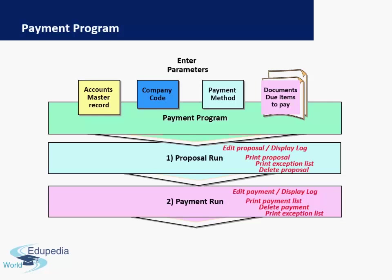If you're happy with the proposal, then you move ahead to the second and last step, which is the payment run. The payment run is exactly like a proposal run, but it will finally make the postings in accounting. This means once a payment run is executed, your GL account will be posted in SAP and the cleared items will be shown. If there are 10 invoices which were to be paid, those were open items until the proposal stage — these open items will now become cleared items in the system.